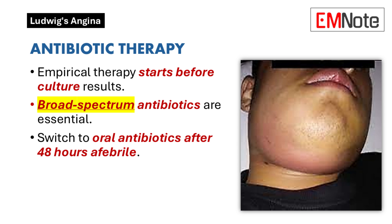Empirical antibiotic therapy targeting both aerobic and anaerobic bacteria is initiated until culture results are available. Common regimens include a penicillin combined with a beta-lactamase inhibitor or beta-lactamase-resistant antibiotics, such as cefoxitin or meropenem. Anaerobic coverage is typically provided by agents like clindamycin or metronidazole. Parenteral antibiotics are continued until the patient is afebrile for at least 48 hours, followed by oral therapy for two weeks.